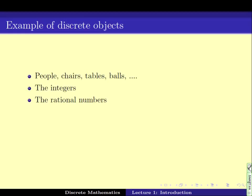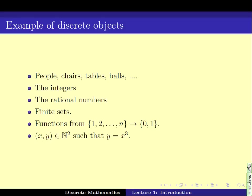The rational numbers, numbers like 2 by 3, 11 by 49, 23 by 108, they are also countable objects. They can be written as a fraction of two integers. So, they are also discrete objects. Any finite set is a discrete object. Functions from the set 1 to n to 0, 1 is a discrete object. Even the function of the form y equals to x squared, where both x and y are from the natural numbers, are discrete objects.